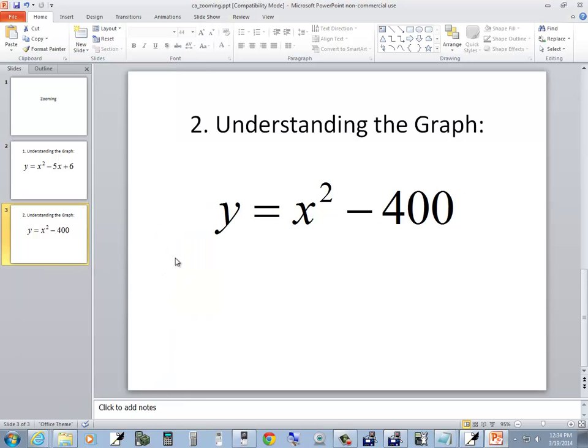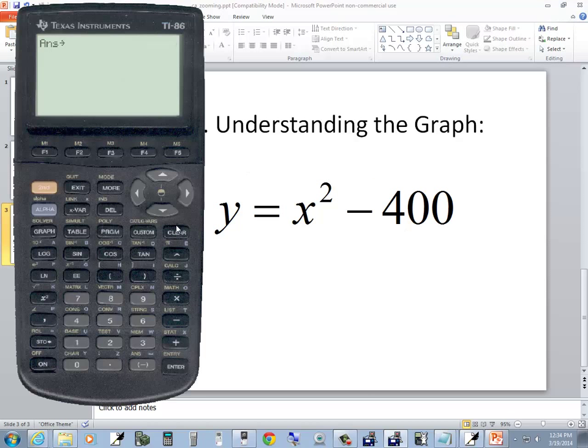Let's take a look at a different one. Y is equal to X squared minus 400. And we're trying to understand a little bit more about that graph. So I'll go to my graph. Y equals is F1. Clear. I'll do my X var, my X squared button. Minus 400. And let me press the exit to bring that menu down. And I want to choose the graph, F5. And we don't see anything.